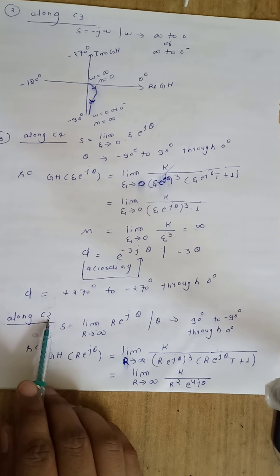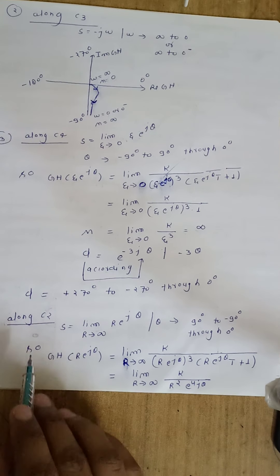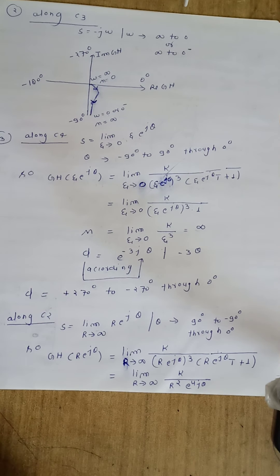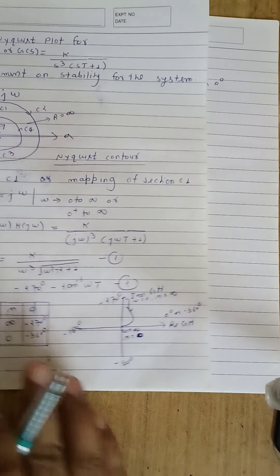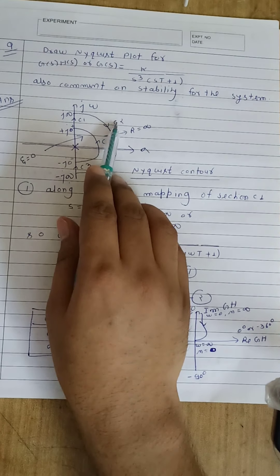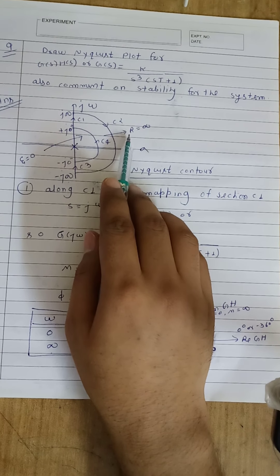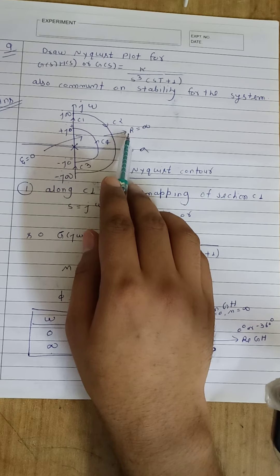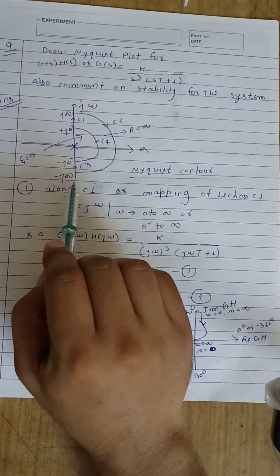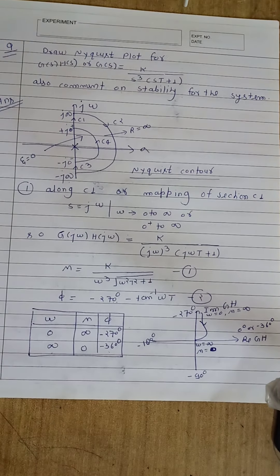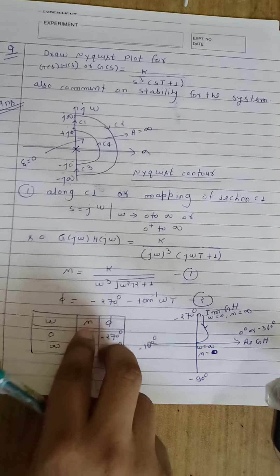Now let us consider section C2. Along C2, I already told you we have infinite radius and theta varies from plus 90 to minus 90 through zero degrees, because C2 crosses the zero degree line. Let us consider radius as R. We can map section C2 according to s equal to the limit as R tends to infinity of R times e to the j-theta.